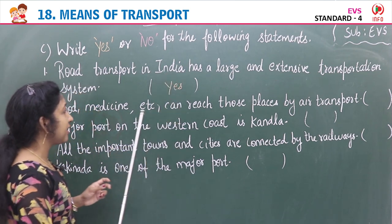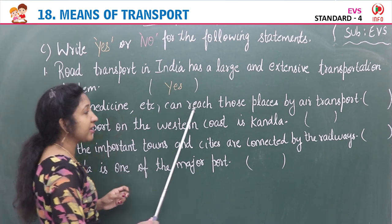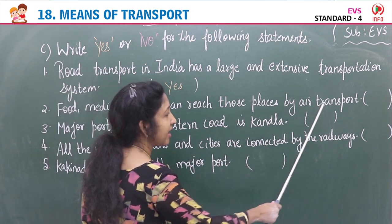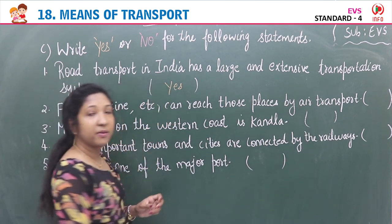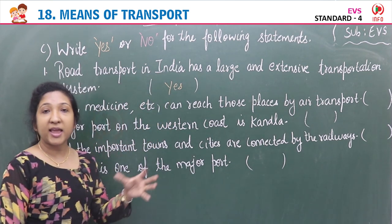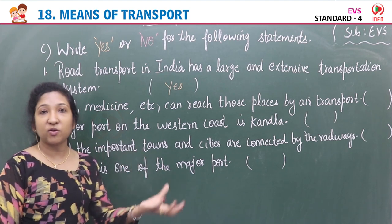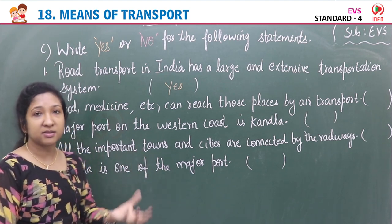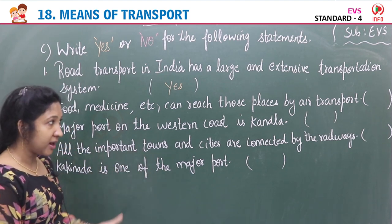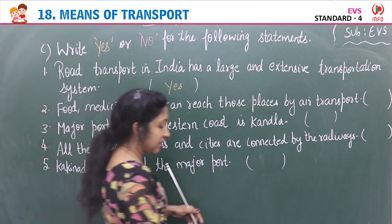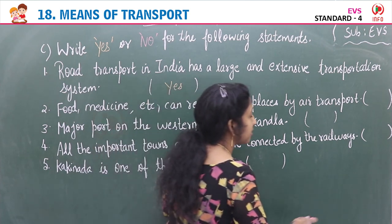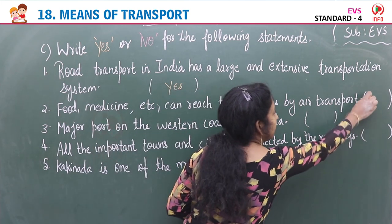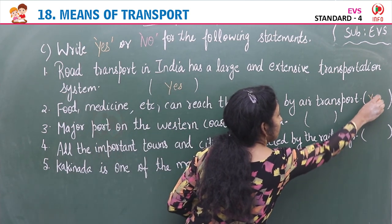Statement two: Food, medicine, etc. can reach those places by air transport. This is correct — food and medicine can indeed be delivered by air transport. So write yes. Statement three: A major port on the western coast is Kandla. Kandla and Mumbai are on the western coast, so this is a true statement. Write yes.